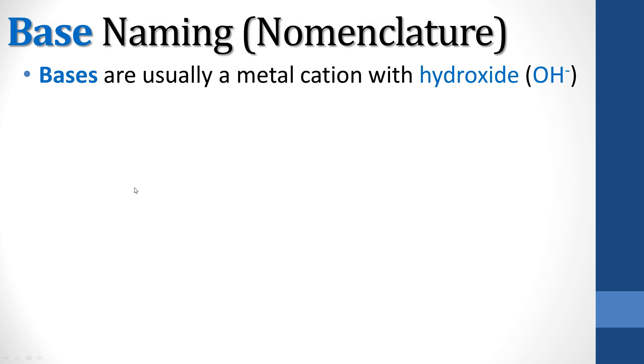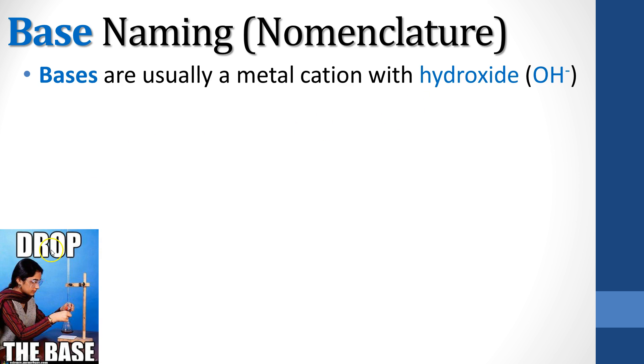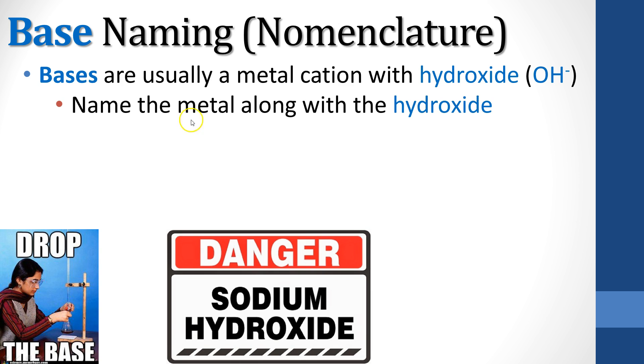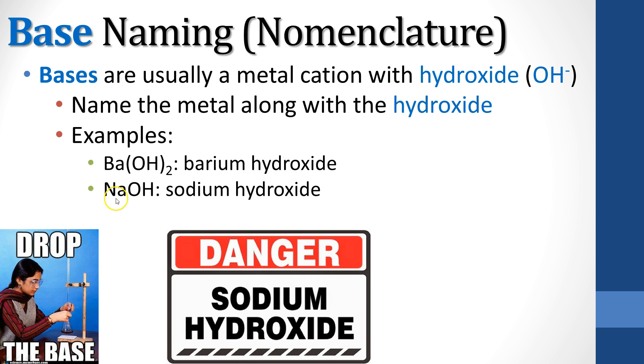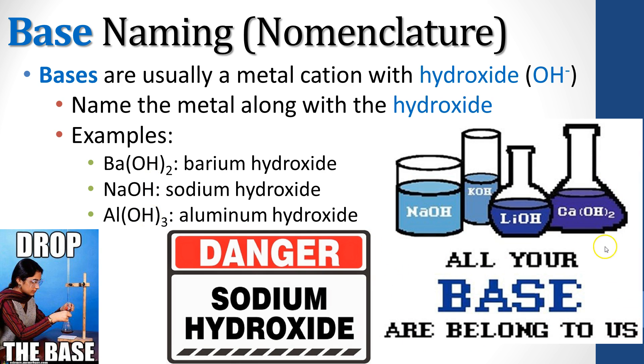When it comes to base naming, those are a lot easier. Bases are usually a metal cation with a hydroxide. So you name the metal along with the hydroxide, like sodium hydroxide. Nothing really fancy here. Barium hydroxide, sodium hydroxide, aluminum hydroxide. Just name the metal, then name the hydroxide that goes with it. All your bases are belong to us. Sodium hydroxide, potassium hydroxide, lithium hydroxide, calcium hydroxide. Base naming, very simple compared to acid naming.